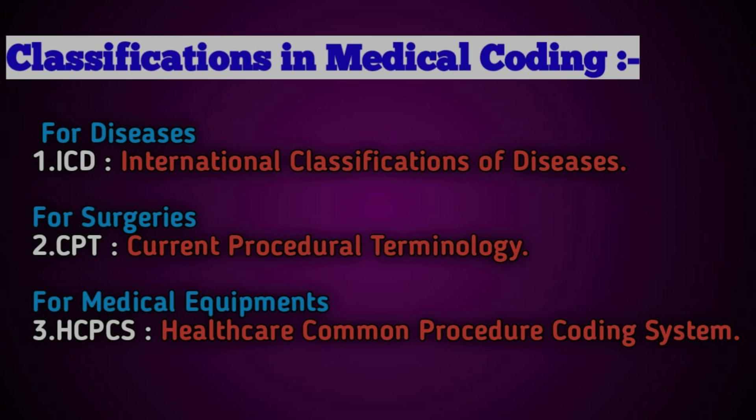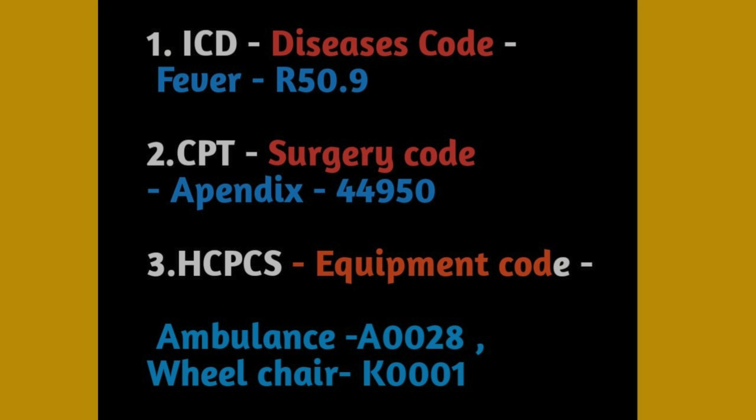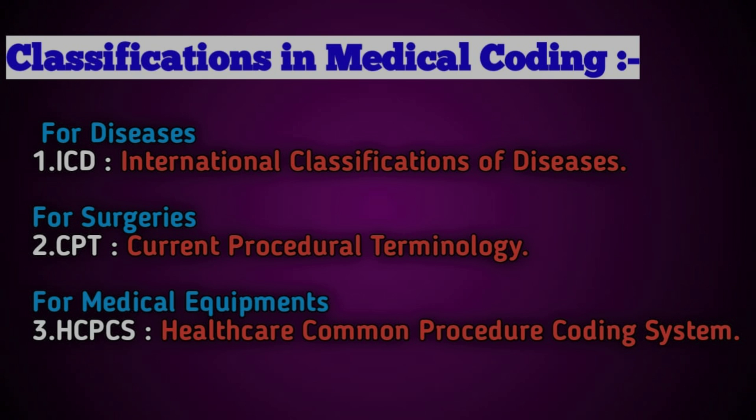The third book is HCPCS — Healthcare Common Procedure Coding System. HCPCS is used for equipment coding. For example, a wheelchair has the code K0001. There are advanced models with different codes as well. These three books — ICD, CPT, and HCPCS — are the core references used in medical coding.